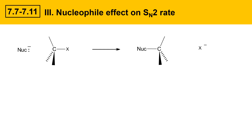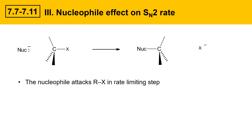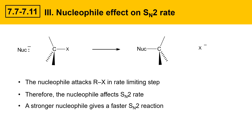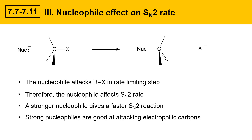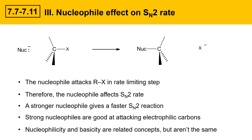The nucleophile has a profound effect on the SN2 reaction rate. It attacks in the rate-determining step — the rate-limiting step. There's only one step in the SN2 reaction and it involves the nucleophile; therefore, the nucleophile affects SN2 rate. A stronger nucleophile gives a faster SN2 reaction, and strong nucleophiles are good at attacking electrophilic carbons. Nucleophilicity and basicity are related concepts but they aren't the same, and in subsequent slides we'll explain the similarities and differences.